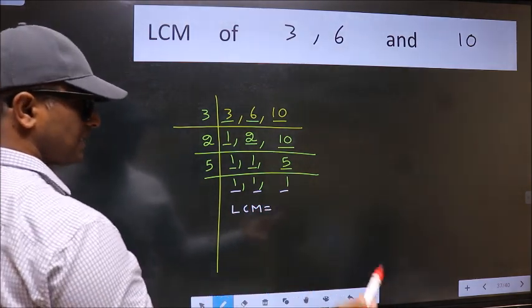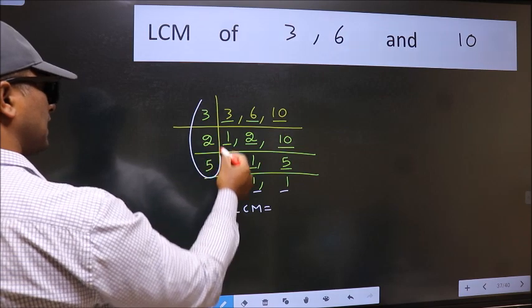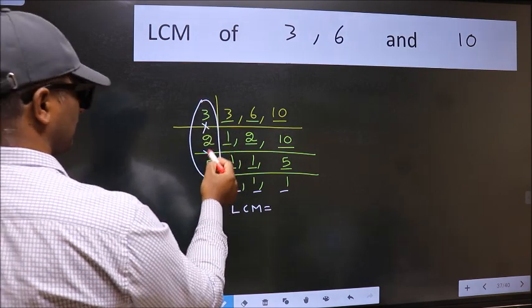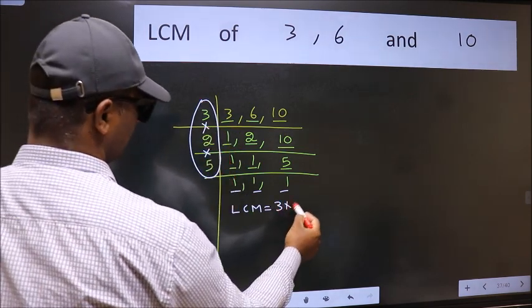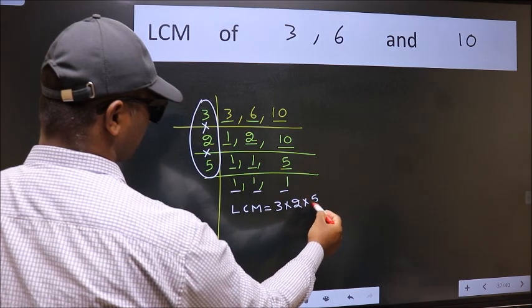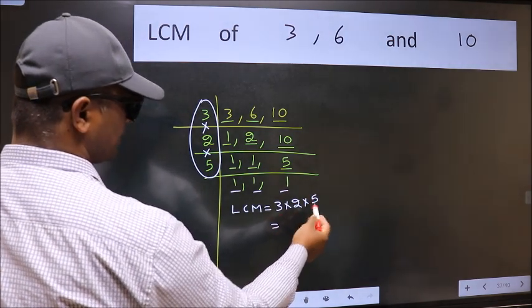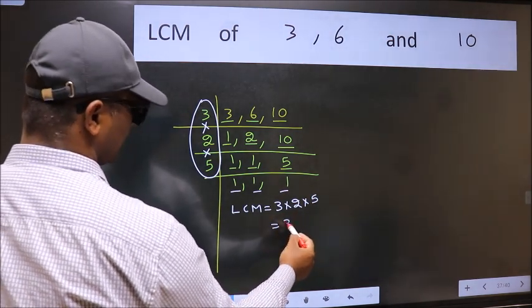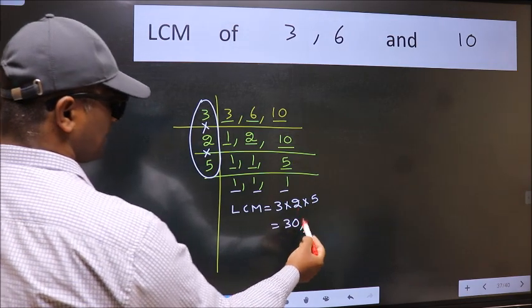LCM is the product of these numbers. That is 3 into 2 into 5. When we multiply these numbers, we get 30 as our LCM. Thank you.